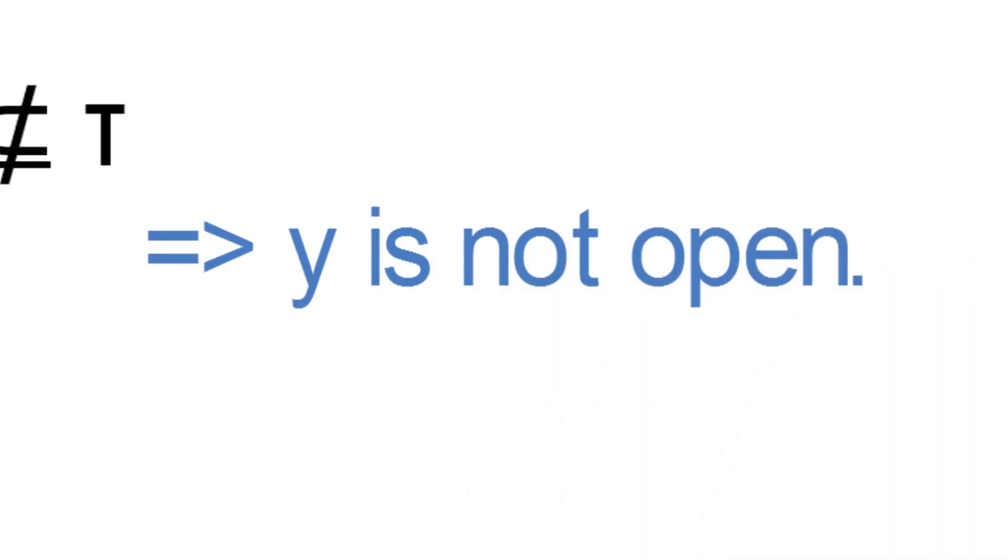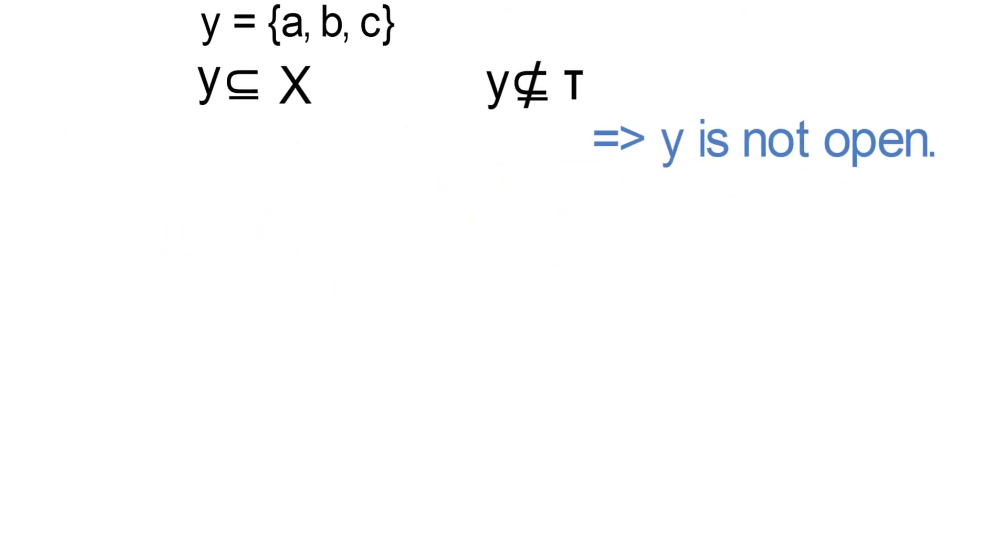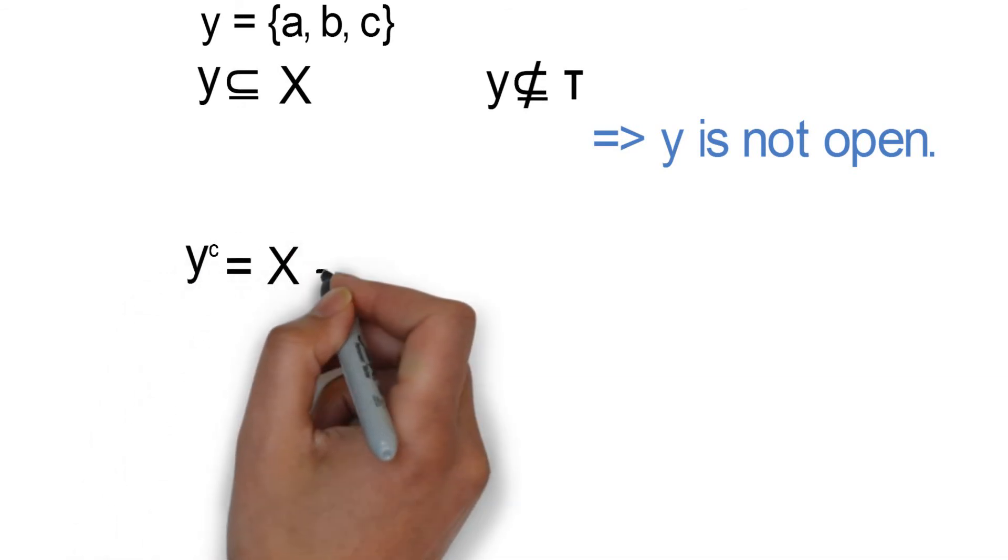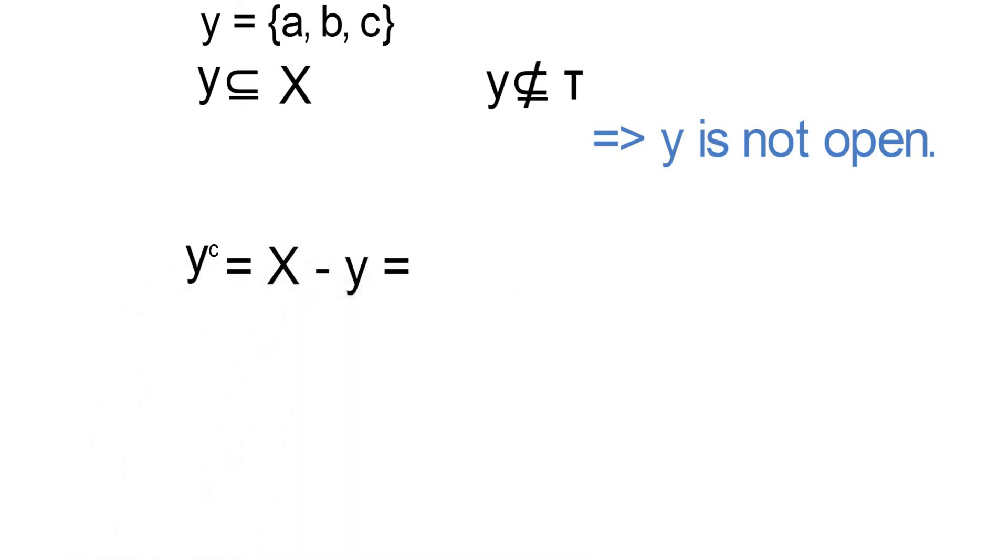Now let's also see if it is closed or not. We simply look for y complement. But how do we do that? We see y^c is equal to the entire set X minus the subset y.